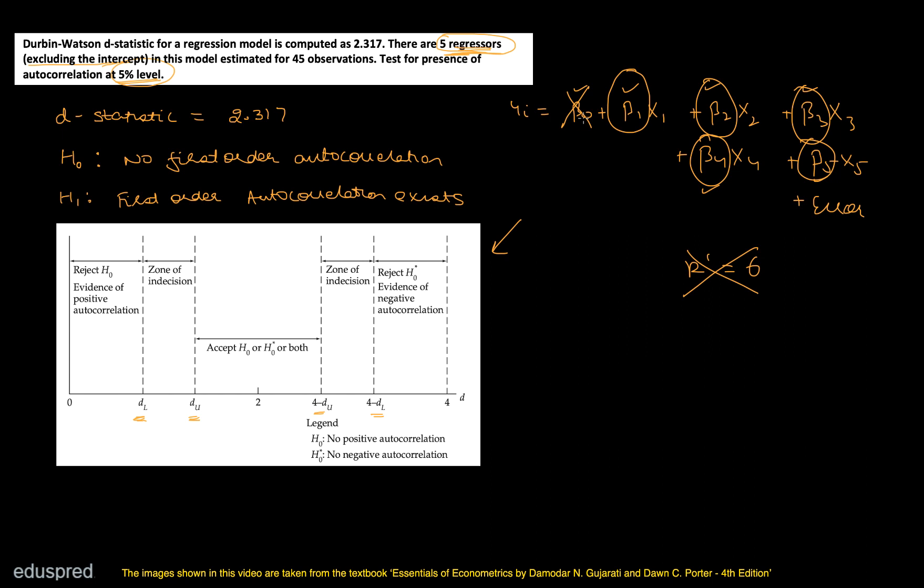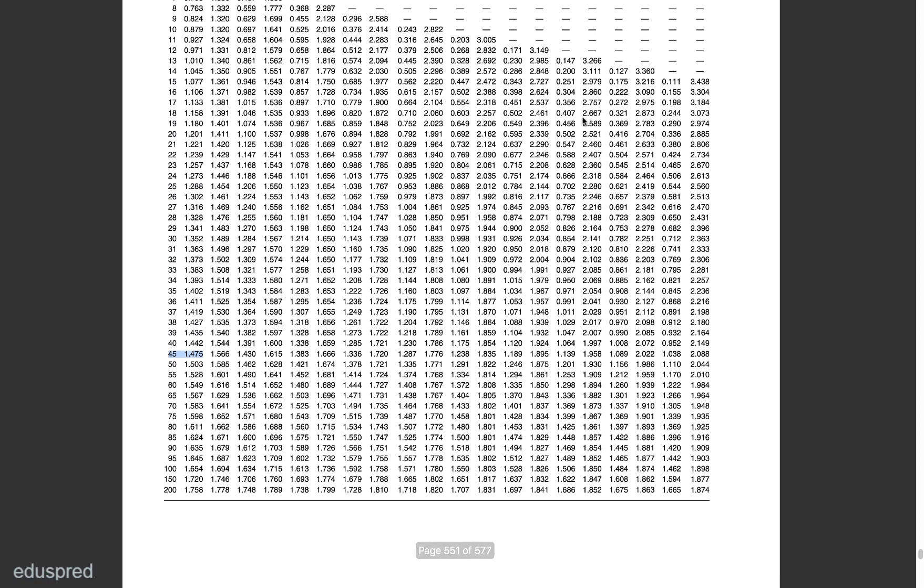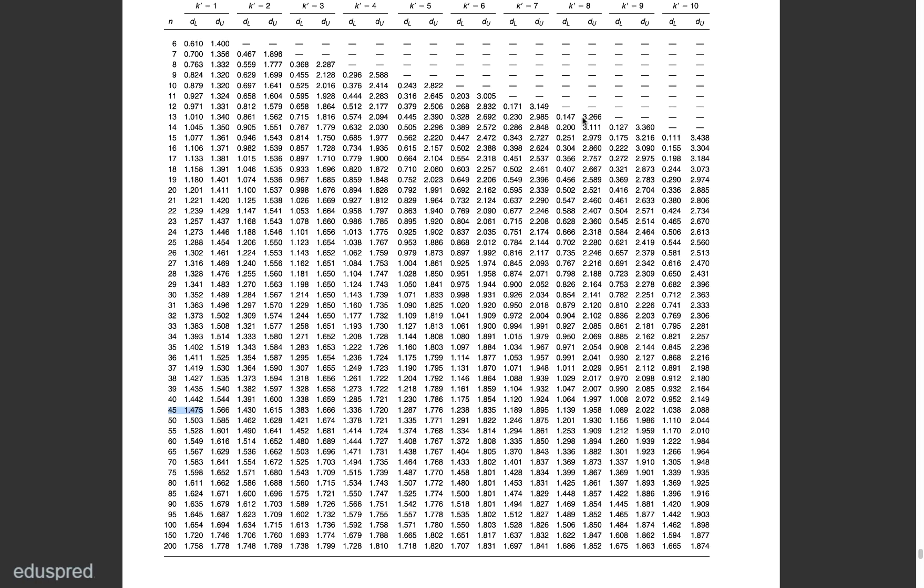So let's go back to the table and see what are the critical values that we are going to get. So in our case, K' is equal to five, and N is equal to 45. That means we have to take a look at this column. And that means the values that we are going to work with are 1.287. So 1.287 is your DL, that's your lower value. And 1.776 is your DU, that's your upper value.